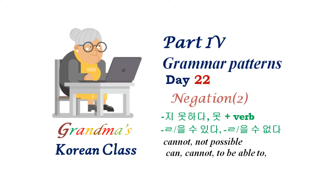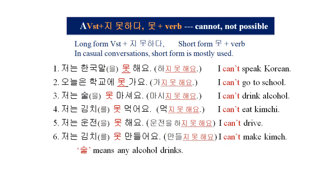Grammar's Korean class, Part 4, Day 22. In Part 4, we will learn many grammar patterns. Let's practice 'cannot' and 'not possible' first. Any action verb plus 지 못하다 is the long form, and the short form is 못 plus any action verb. In casual conversations, the short form is mostly used, so in this lesson let's practice short forms.